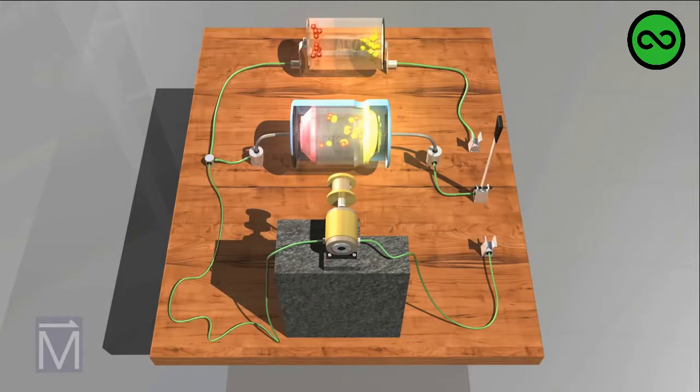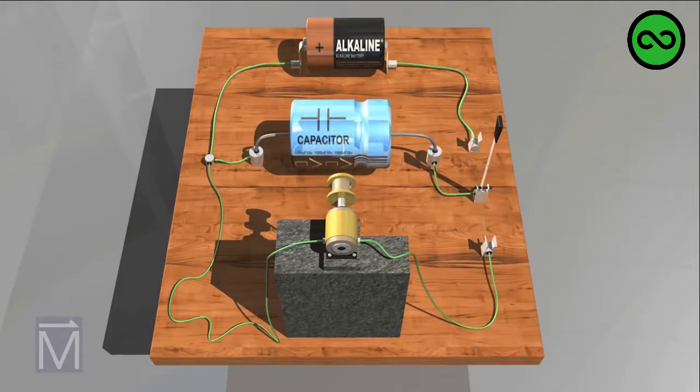However, capacitors can do things a battery can't, as we will show here. For the purposes of this animation, we'll focus on different parts of the current propagating through the wires at different times.